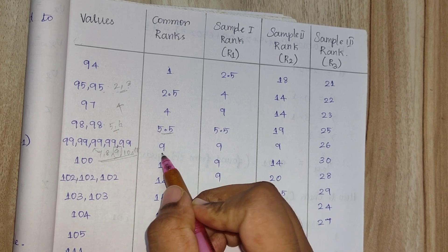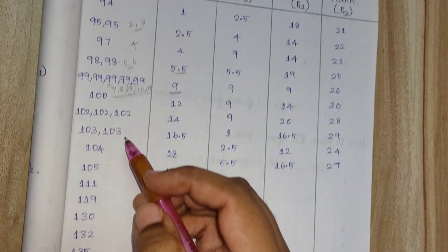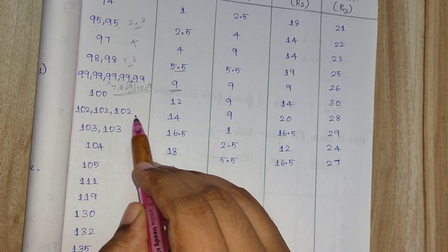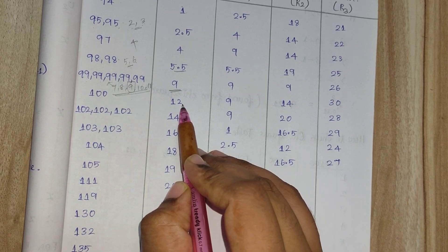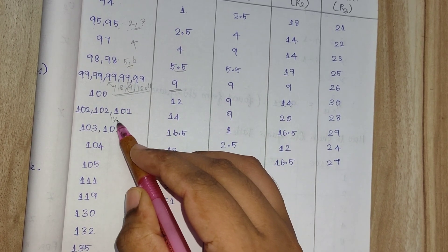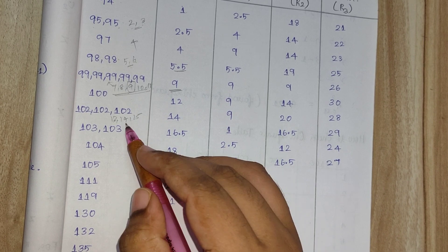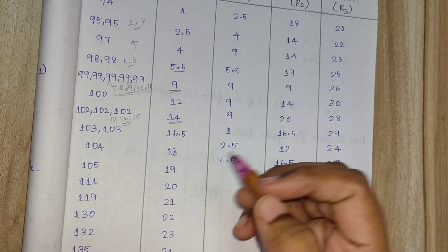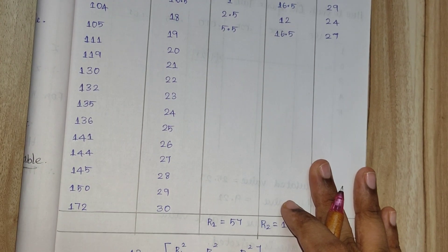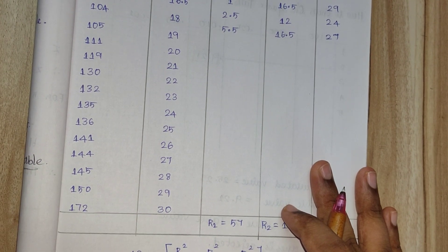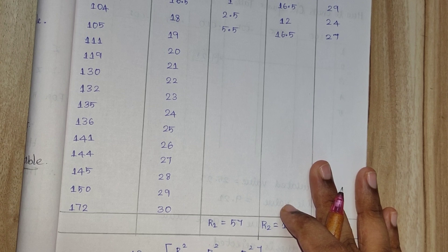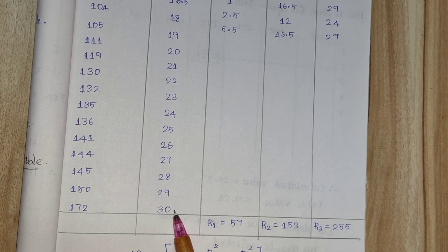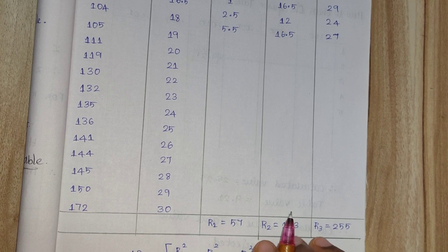Continuing the ranking: for values appearing later, rank 12 onwards is assigned. For a value appearing 3 times, it occupies ranks 13, 14, 15 — so the middle value is 14, and the common rank is 14. We assign common ranks to all values this way. Since there are 30 total values across 3 samples combined, our ranks should go up to 30. We verify this to ensure no mistakes.